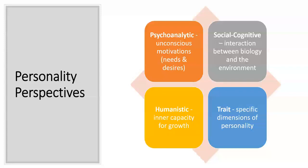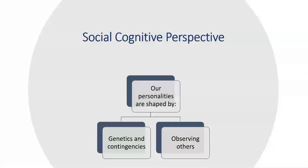Unlike temperament research, personality seems to have much less of a consensus on where personality comes from. Different perspectives have radically different explanations for how we develop particular personalities. The psychoanalytic perspective proposes that personality is derived from unconscious motivations such as needs and desires — your typical Freudian theories. The social cognitive perspective focuses on the interaction between biology and the environment. The humanistic perspective focuses on one's inner capacity for growth. And last, the trait perspective, which seems to be the most prominent perspective in the field, tries to capture specific dimensions of personality.